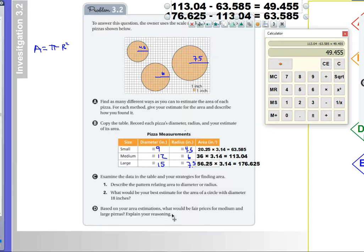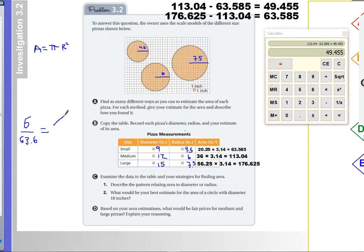Okay, and finally, based on your area, what would be the fair price for the medium and large? So this is a great time for proportional logic. So we know that $6 is just right for an area of 63.6. And we need to find the price, let's call that X, of a pizza that is 113.0. So the question is, how do I solve this? Well, this looks like a perfect opportunity for cross multiplication.